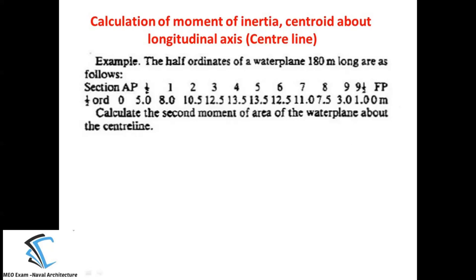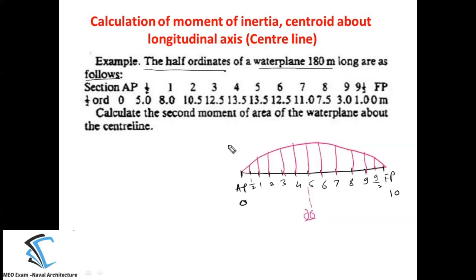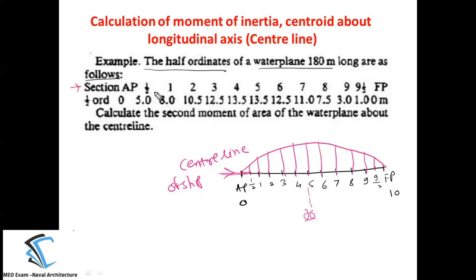Let's start a numerical to understand how to calculate the area of the waterplane, location of the centroid, first moment, and second moment of area about the centre line. The half ordinates of a waterplane area 180 metres long are given. In this numerical they have given the half ordinate and the length of the waterplane is 180 metres.